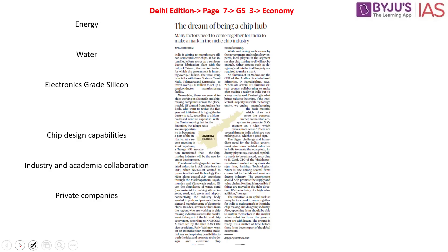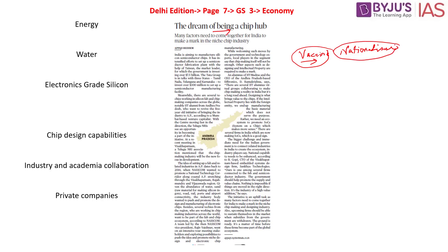The next article is titled 'The Dream of Being a Chip Hub.' When COVID-19 hit, a term called vaccine nationalism emerged — where countries manufacturing vaccines exported them to countries they had tie-ups with or prioritized their own people, instead of sending them to healthcare workers and priority centers as intended. This is what is called vaccine nationalism.